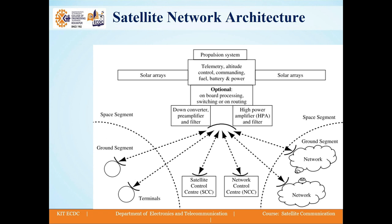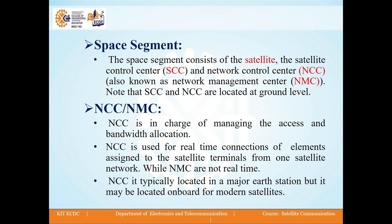Then there is a ground segment. On the ground segment, there are various networks and various receivers. In the space segment, we have the satellite, and in the ground segment, we have networks and terminals. There is also a link between the satellite and the satellite control center and network control center. The space segment consists of the satellite, the satellite control center, and the network control center.